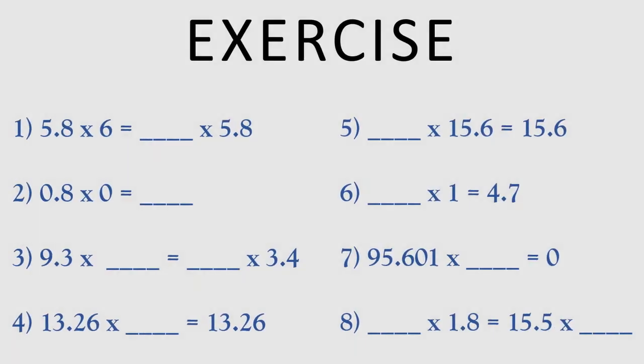Let's practice Properties of Multiplication of Decimal Numbers. Question number 1: 5.8 x 6 is equal to dash x 5.8. In this question, 5.8 is given on both sides, but 6 is given only on the left-hand side. So the answer in the blank is 6. Question number 2: 0.8 x 0 is equal to dash. We know that product of a decimal number and 0 is always 0, so the answer is 0.